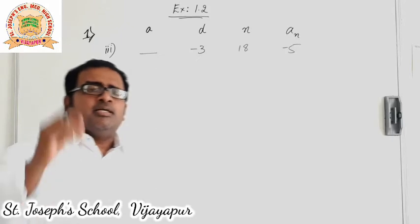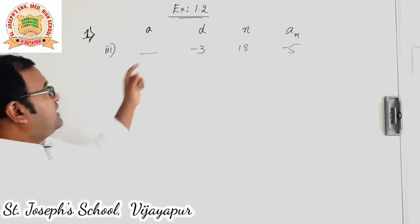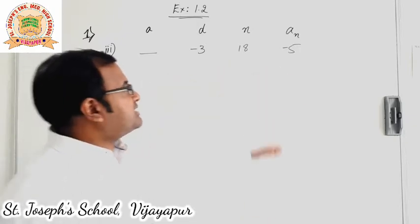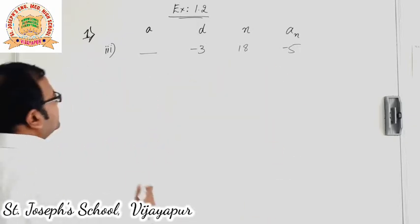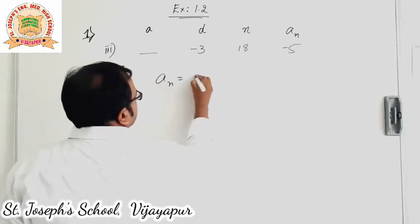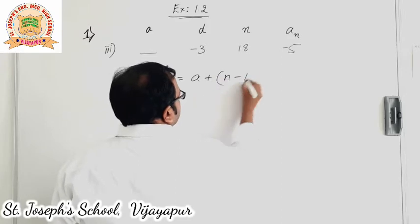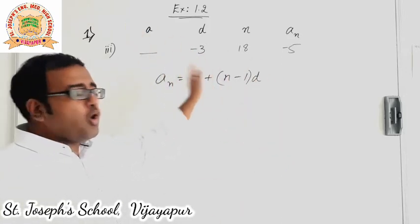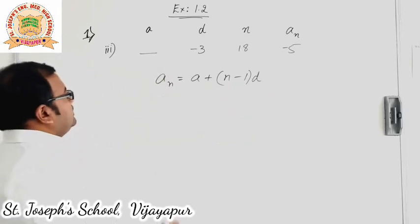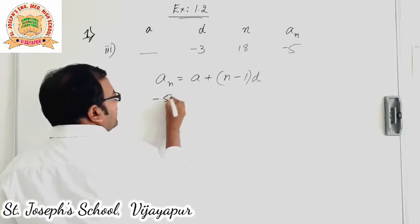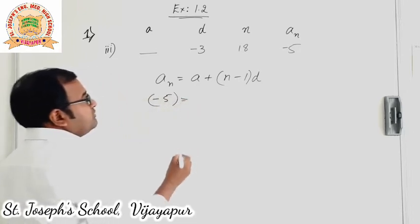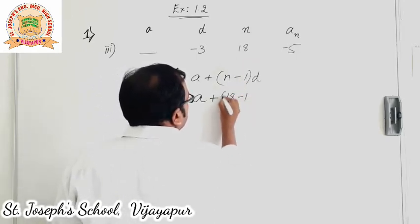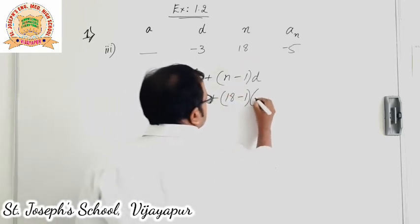Sub question 3: we need to find out the first term a. d is given as minus 3, n is given as 18, and the last term is minus 5. I will use the an formula again: an is equal to a plus n minus 1 into d. All the terms available and the one to be found are within this single formula. So an value is minus 5. a we don't know, let it be as it is. n is 18 minus 1 into d which is minus 3.